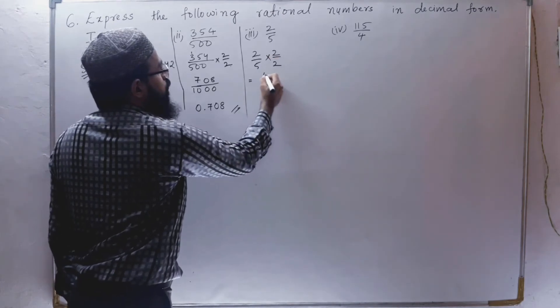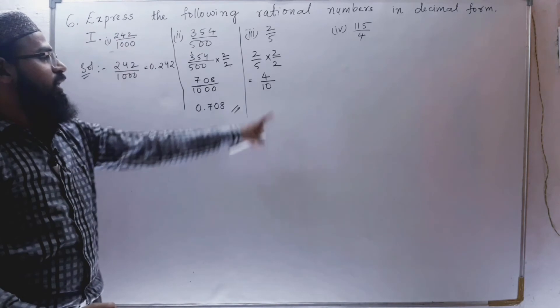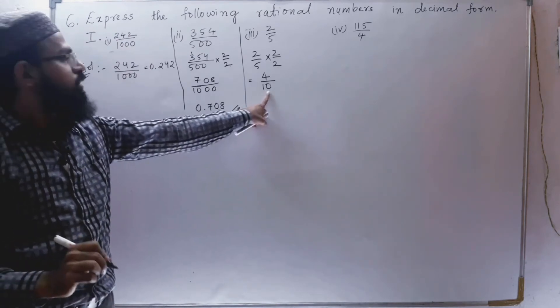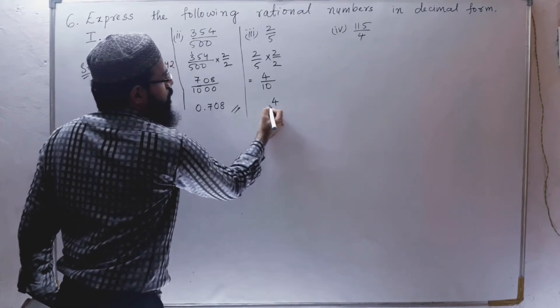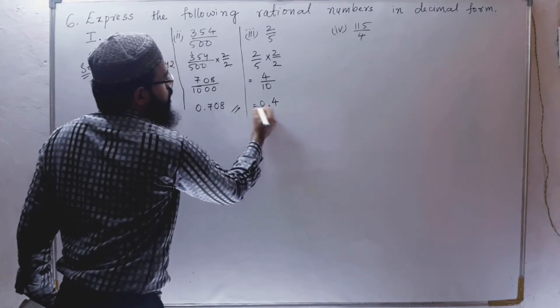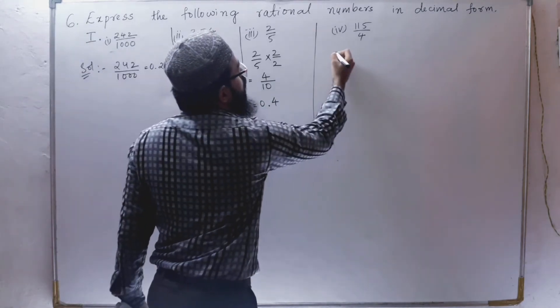2 times 2 is 4, 2 times 5 is 10. As you can see, single zero is there. Then we can write 4. After 1 number, we can put decimal from backside: 0.4.